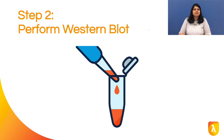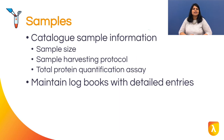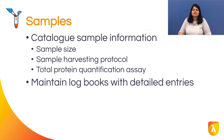Once you have identified the journal of choice, you can begin consolidating the materials needed to make a solid manuscript that will have the best chance of acceptance. This is the second most important step. Catalog all relevant details pertaining to your experimental design, including sample size, origin and sex of the animals used as samples, detailed sample harvesting protocol, and total protein quantification assay.